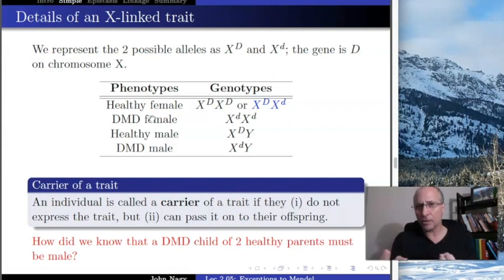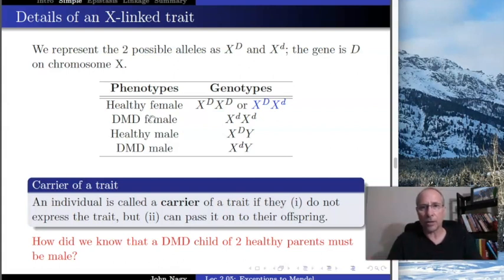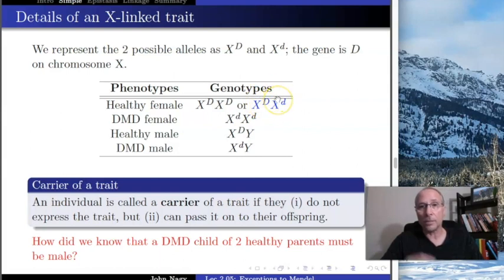Is this Mendelian dominance? Fall back on the definition: if the allele is expressed fully in the heterozygote, it's dominant. Notice the heterozygous individual does not have DMD — they are perfectly normal. Therefore, normal is dominant to DMD; DMD is recessive. This is an example where dominance itself is not violated — something else is.